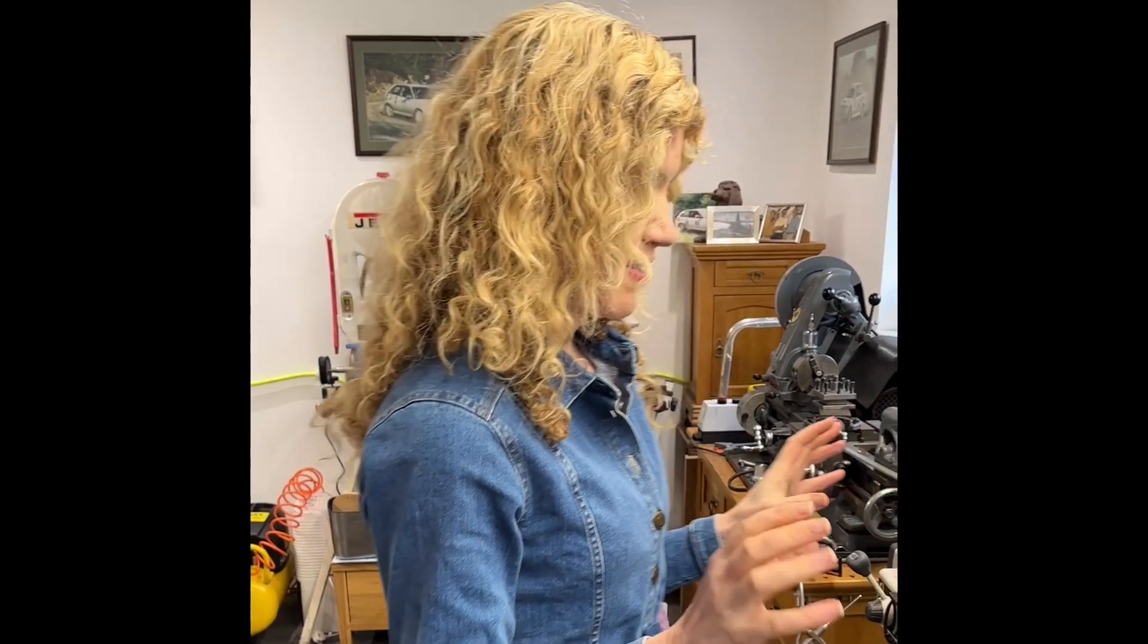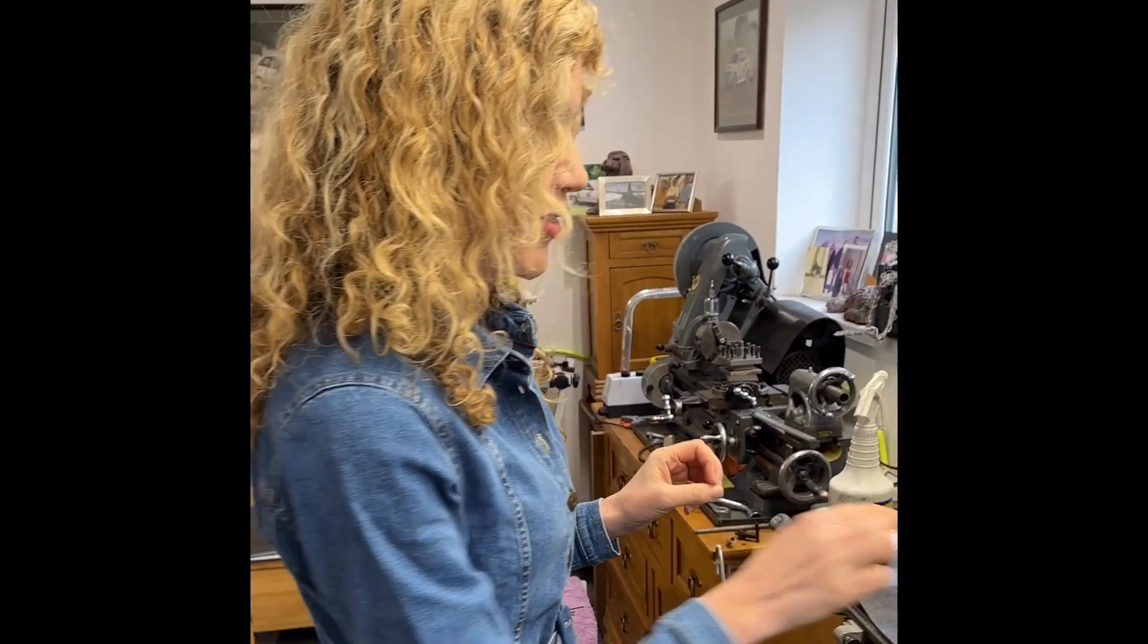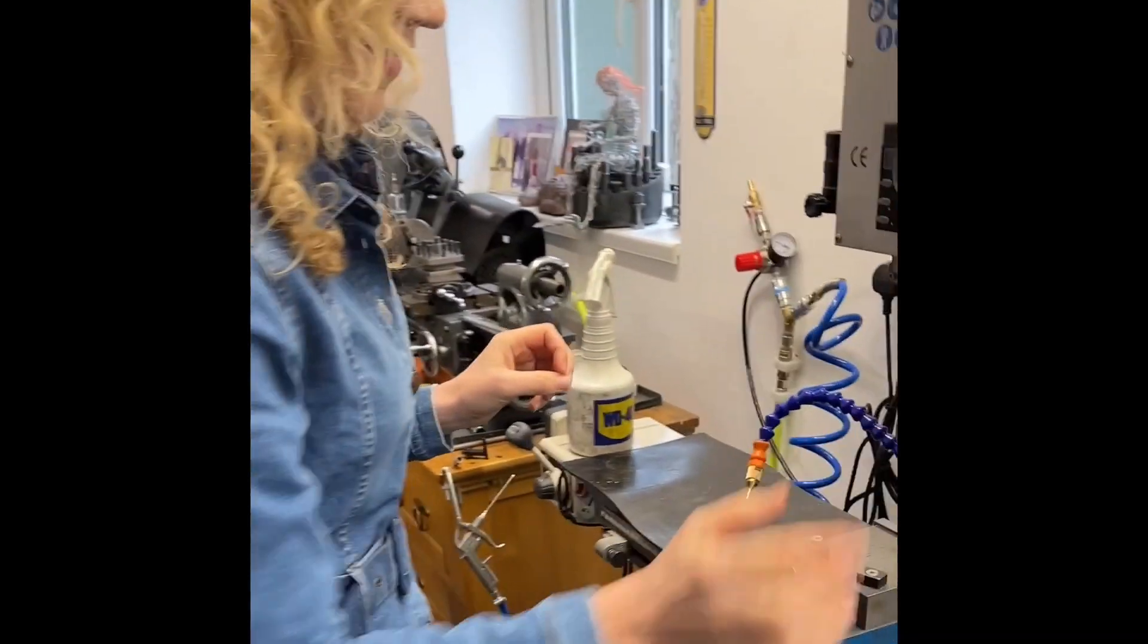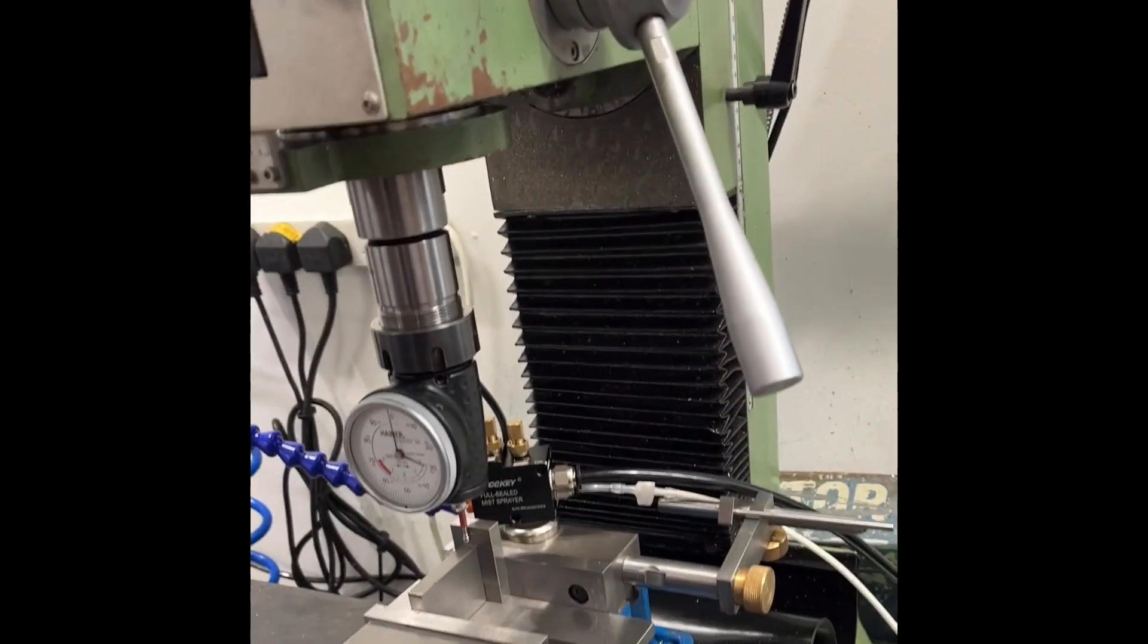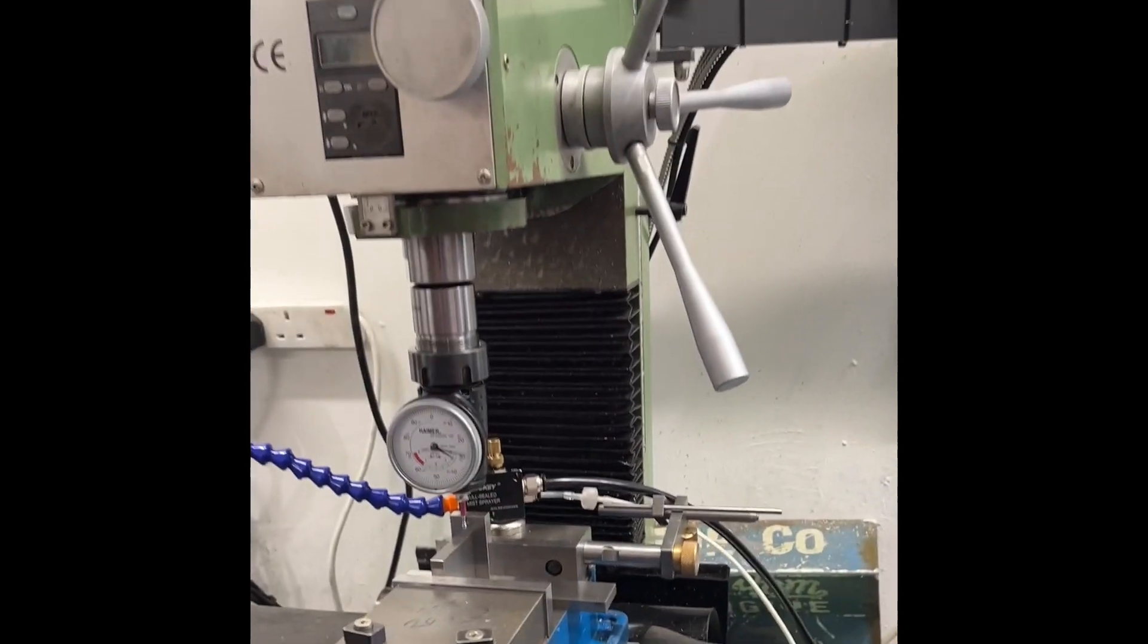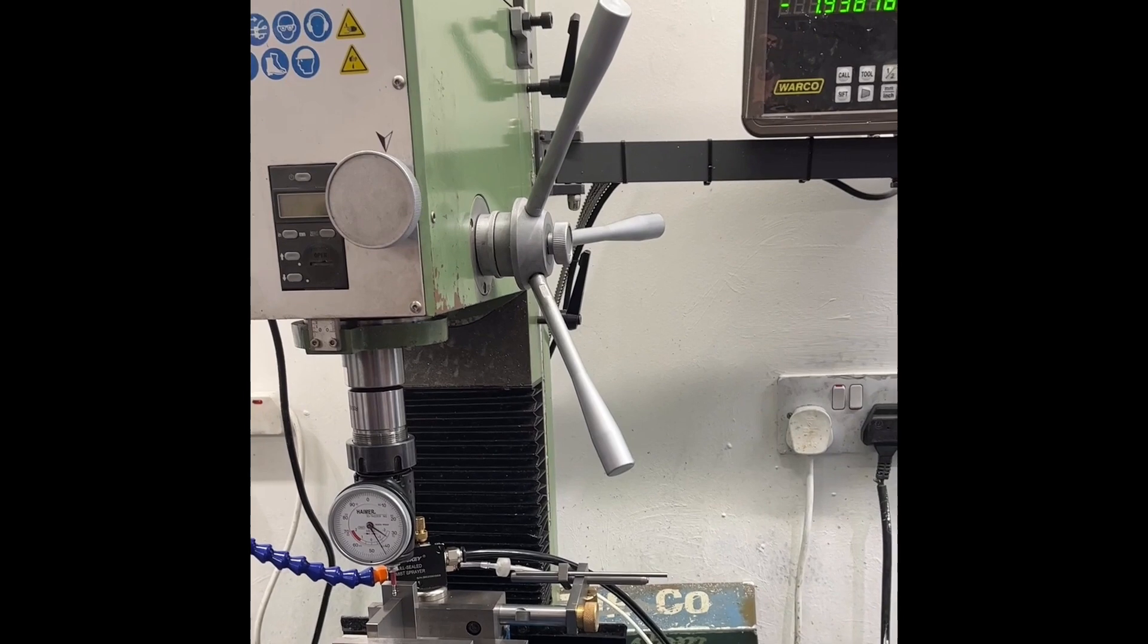We're going to be calibrating our milling machine with a two inch gauge block here. So very gently. I'm going to do it very gently. Just move this around.